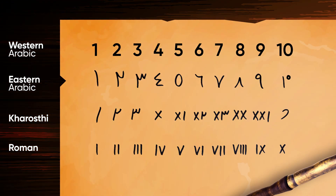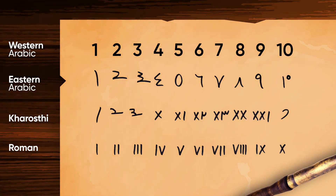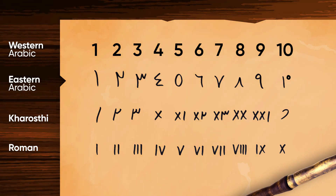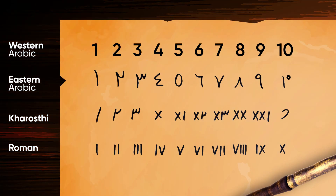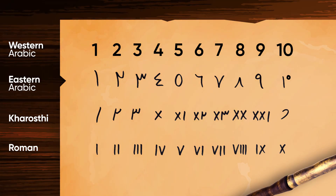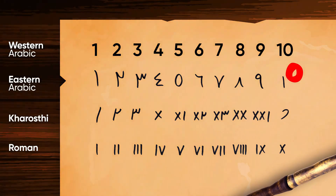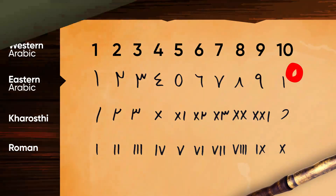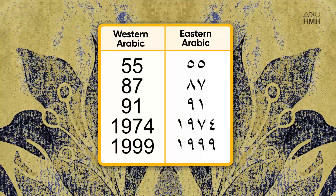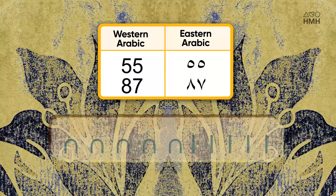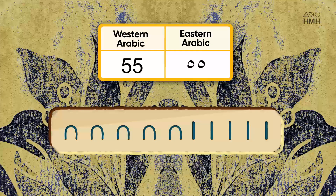I can't help but notice the similarity between Eastern Arabic and Karasthi numerals for 1, 2, and 3 — and I also can't help but notice what happens if you rotate them 90 degrees counterclockwise. Eastern Arabic numerals have one big difference that makes them modern like ours and way more efficient than Karasthi or Roman numerals: they have a zero. This means that with nine unique symbols for 1 through 9, they can use place value to represent every number in the world.